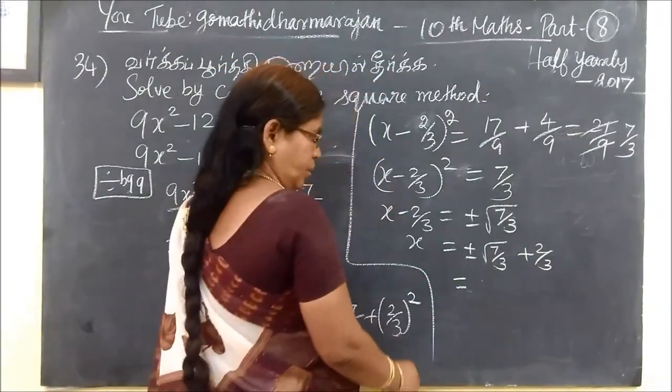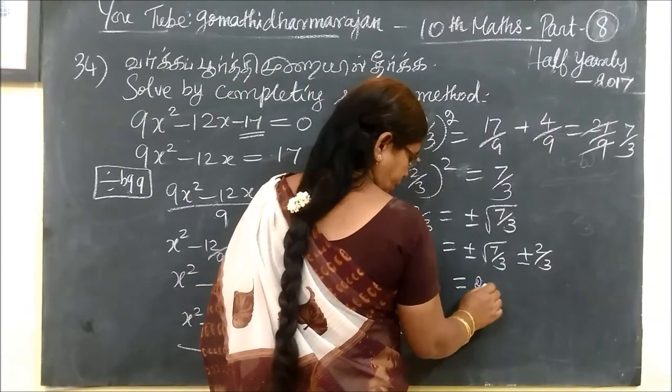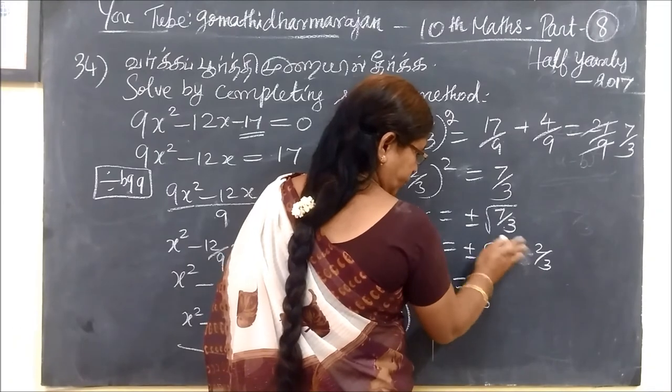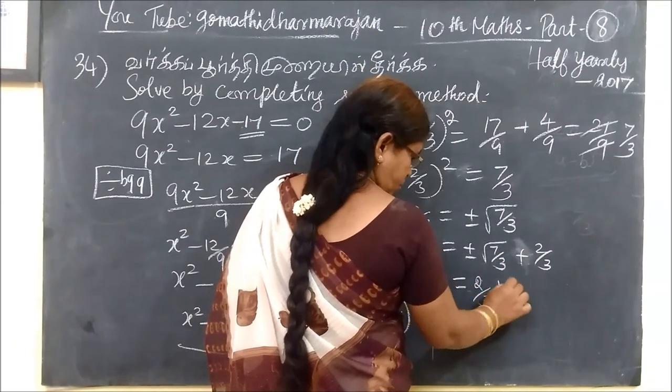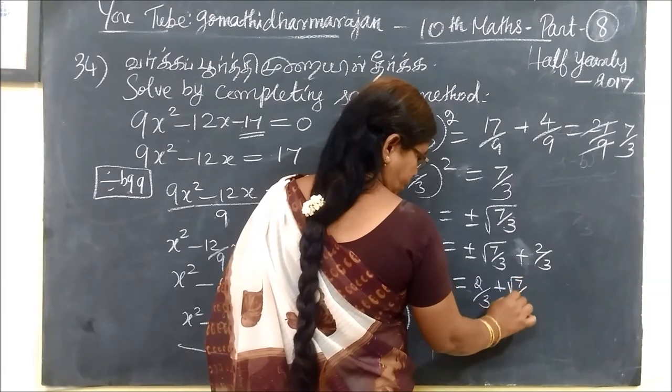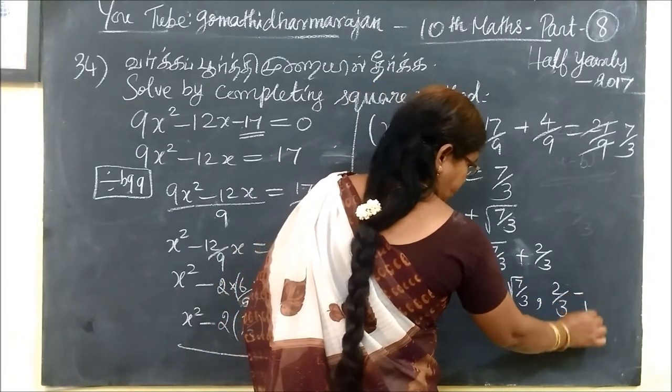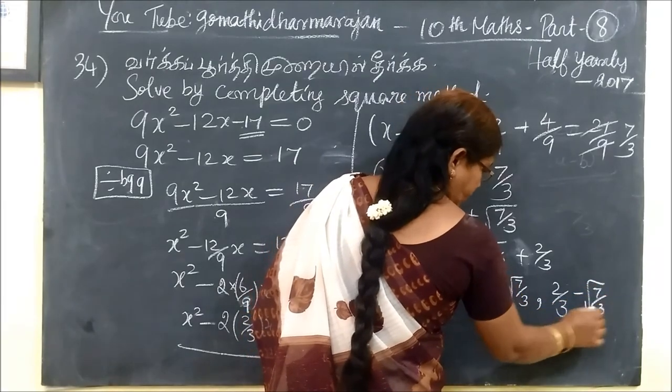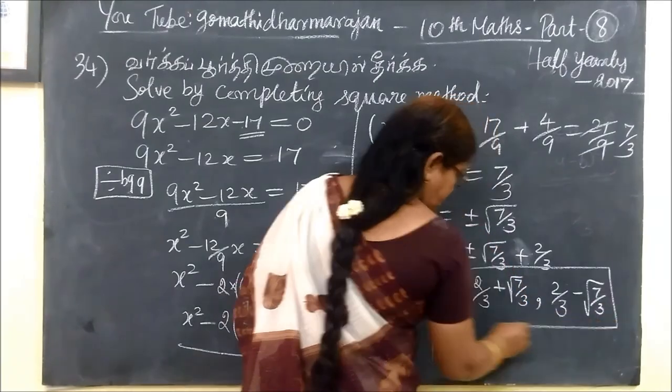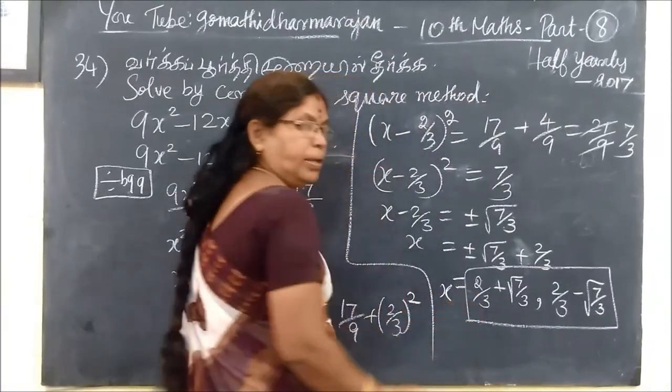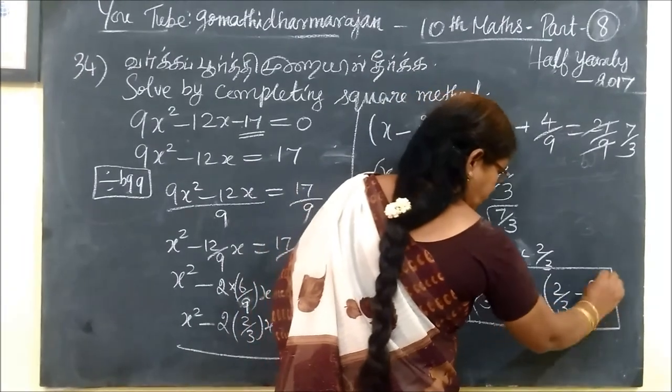So 2 by 3, then plus the answer is, plus root of 7 by 3, and 2 by 3 minus root of 7 by 3. This answer is x. So one answer is this, and the other answer is this.